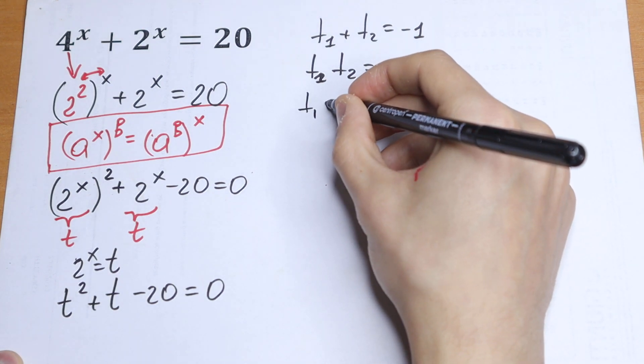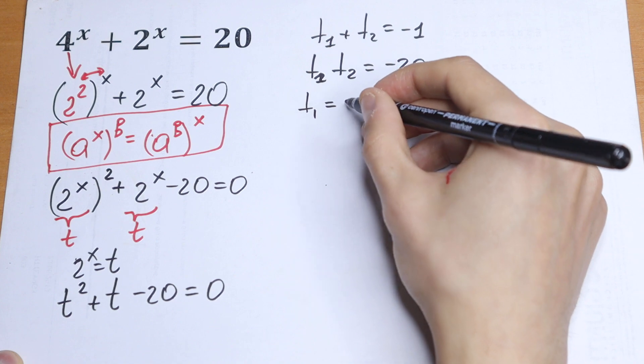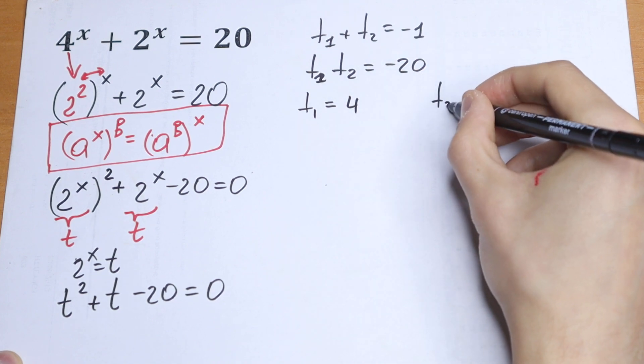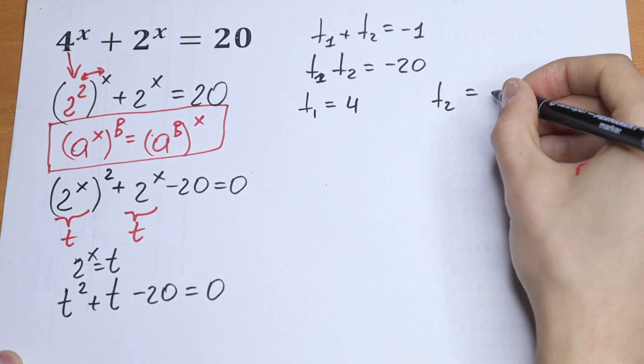So, of course, the first t will be equal to 4 and the second t will be equal to minus 5.